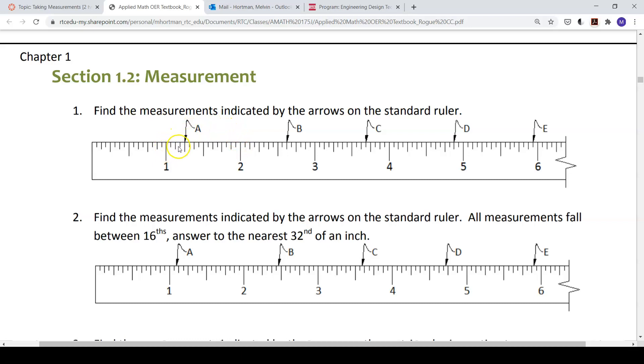1 inch, 1 and 1 eighths, 1 and 2 eighths, 1 and 3 eighths, and so on up to 2 inches. What we'd more commonly say is simplify the fractions: 1 and 1 eighths, 1 and 1 fourths, 1 and 3 eighths, 1 and a half, 1 and 5 eighths, 1 and 3 fourths, 1 and 7 eighths, 2 inches.